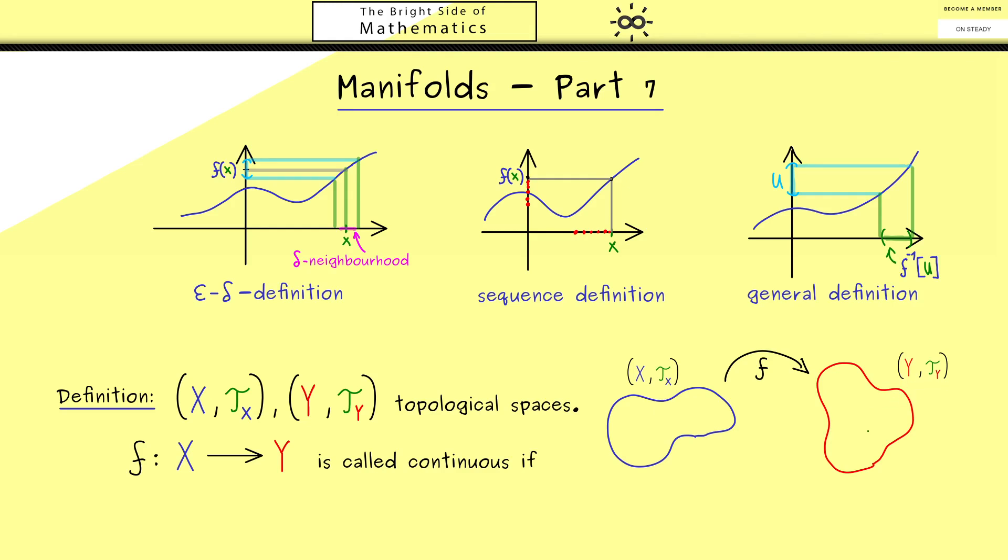And therefore we do this as I already told you by taking any open set U on the right hand side, and then we go to the left hand side to the pre-image. And if this pre-image is also an open set, we call the map continuous.